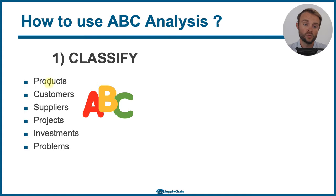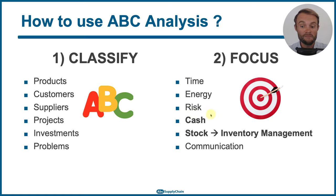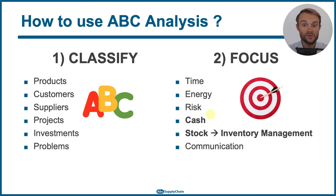ABC analysis is one of the foundations you need to master in supply chain and operations. The first step is to classify your products, customers, suppliers, projects, and investments. After classification, you focus your time and energy on what is really important — your A products, A customers, A suppliers. In inventory management, you need to invest in your most strategic products to ensure good service rate, and focus your communication on what makes a big difference for your business.